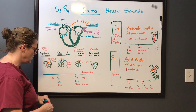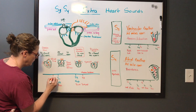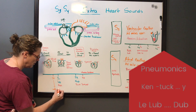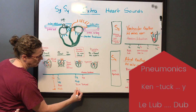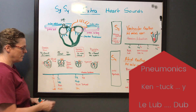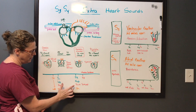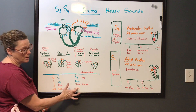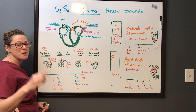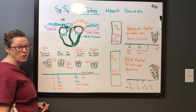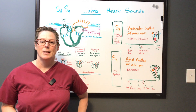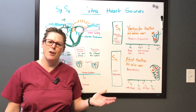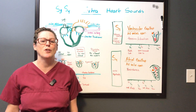So when you're listening to those heart sounds, remember: lub-dub, lub-dub is normal. Lub-dub-ta, lub-dub-ta is your S3 — 'Fuck, you're screwed.' La-lub-dub, la-lub-dub is your S4 — 'Well, fuck you.' If the heart is telling you 'fuck, you're screwed,' or 'well, fuck you,' you know you've got an S3 or an S4.